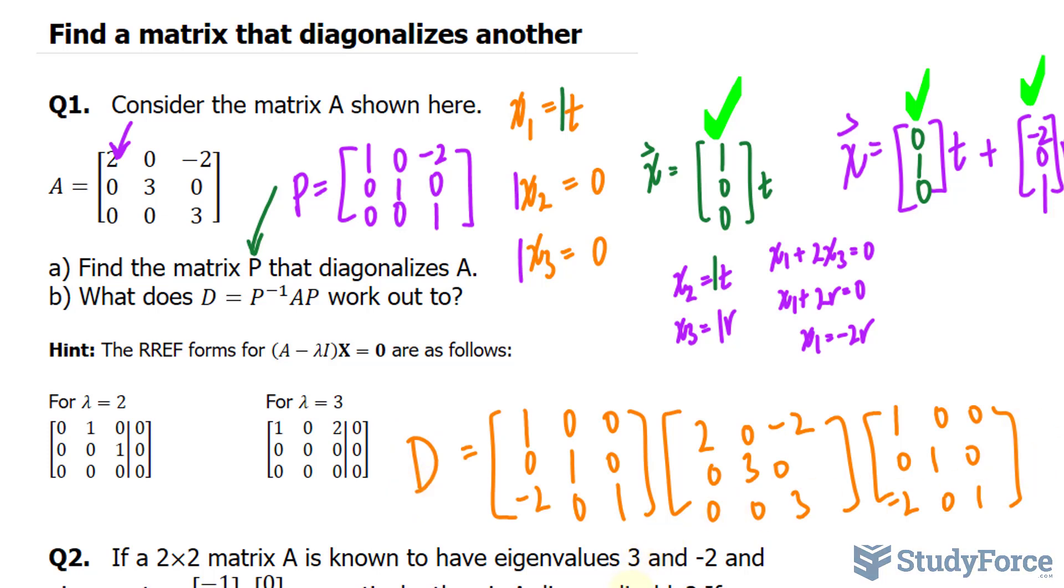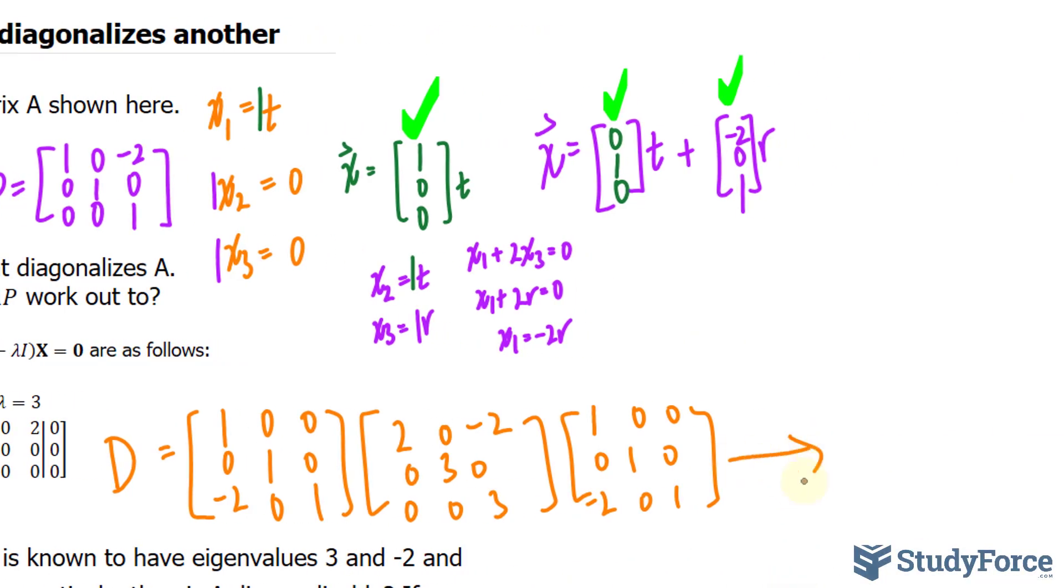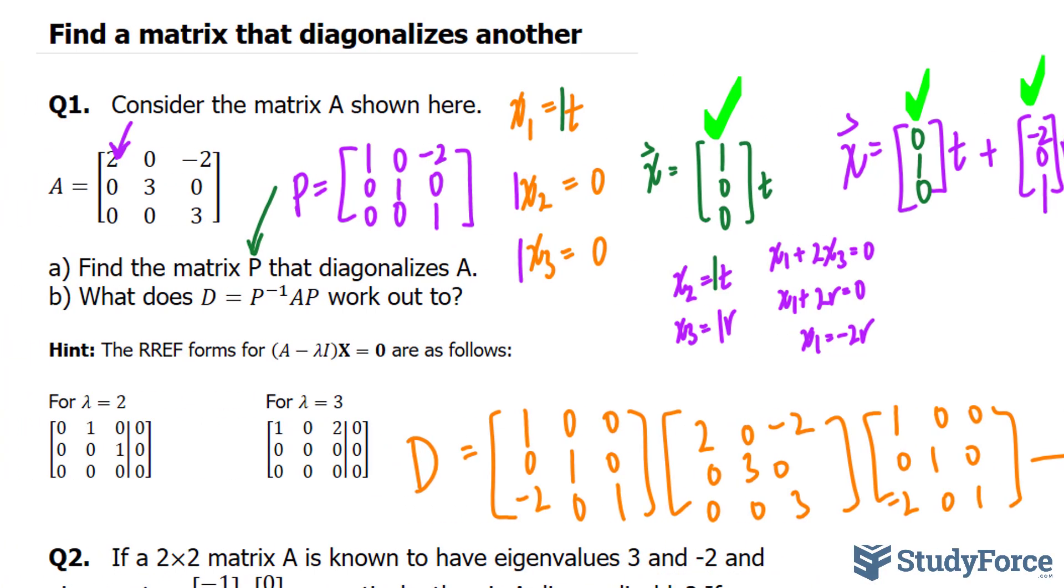The answer to this is D, and it happens to be 2, 0, 0, 0, 3, 0, and 0, 0, 3. That's the answer to question number one. Let's move on to question number two.